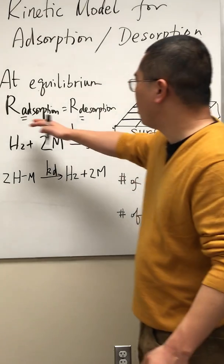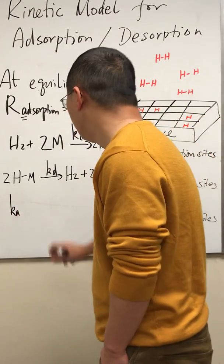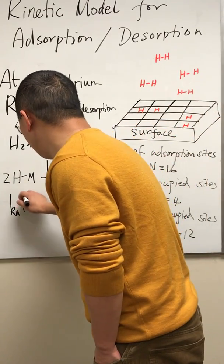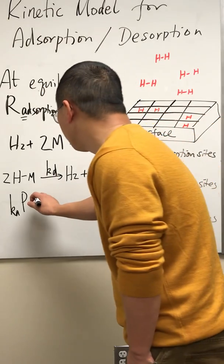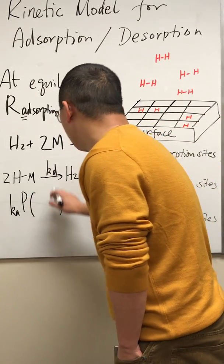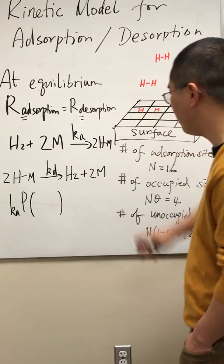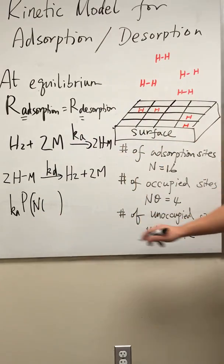Alright, and then we just plug in this adsorption reaction rate desorption reaction rate. It's ka times the concentration or pressure of H2, and for convenience I'm just using the pressure of H2. Anyway, the pressure is equal to CRT, C is the concentration because PV equals NRT. And times over here, this M is the available sites, so it's got to be N times one minus theta. Theta is the percentage of occupied sites.